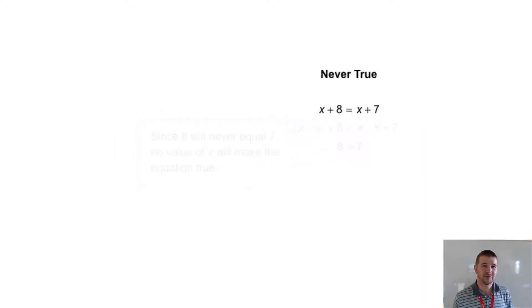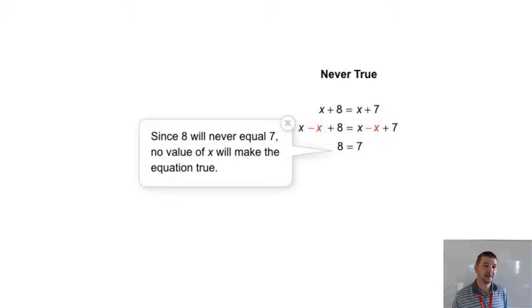And here's an example of never true. The equation x plus 8 equals x plus 7. We can work to solve with inverse operations. Subtracting x from each side, we find 8 equals 7 and that's simply not true. So since 8 will never equal 7, no value of x will make the equation true.